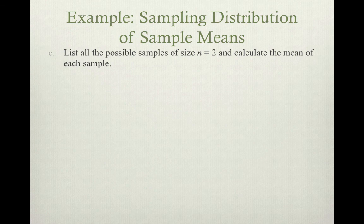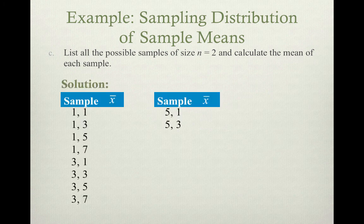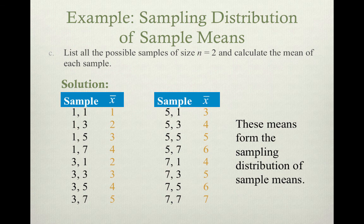Now let's go through how a sampling distribution of sample means is different. Now what we want to do is list all the possible samples of size n equals 2 and calculate the mean of each sample. With replacement, I'm going to select two numbers — I can select 1,1 — 1,3 — 1,5 — 1,7 — and so forth. Here are all my possible pairs of numbers given 1, 3, 5, and 7. For each pair I calculate the sample mean. These means form the sampling distribution of sample means.